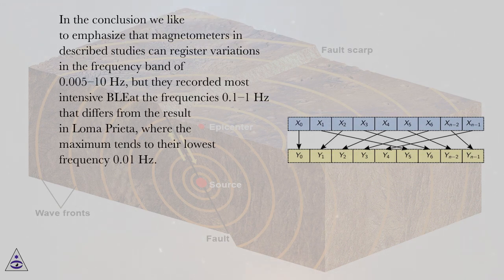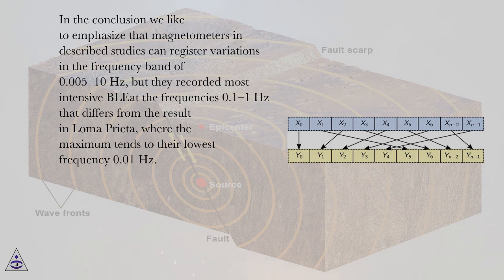In the conclusion we like to emphasize that magnetometers in described studies can register variations in the frequency band of 0.005 to 10 Hz, but they recorded most intensive BLE at the frequencies 0.1 to 1 Hz that differs from the results in Loma Prieta, where the maximum tends to their lowest frequency 0.01 Hz.